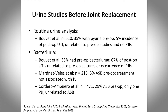A second study, Martinez-Velez, looked at 215 patients prior to joint replacements. They only had a 5% incidence of asymptomatic bacteriuria, which is quite low. Treatment of asymptomatic bacteriuria pre-op had no impact on whether patients developed prosthetic joint infections or surgical site infections post-op.